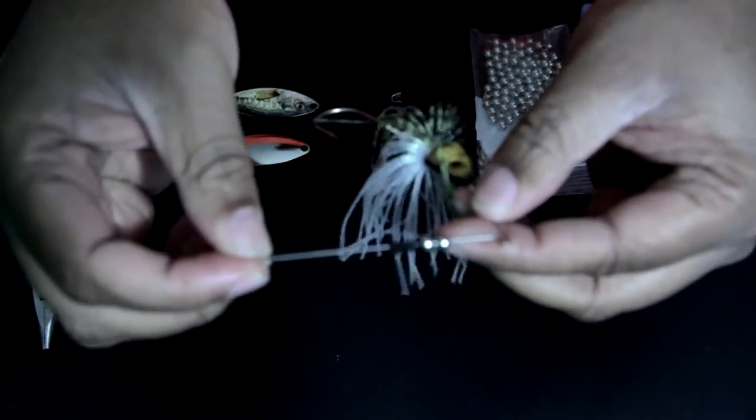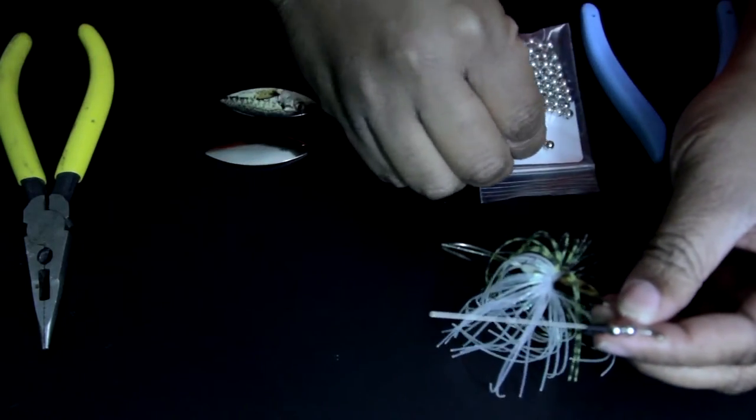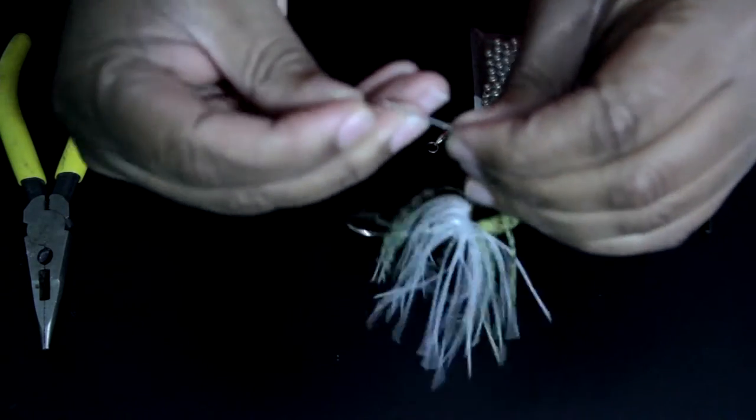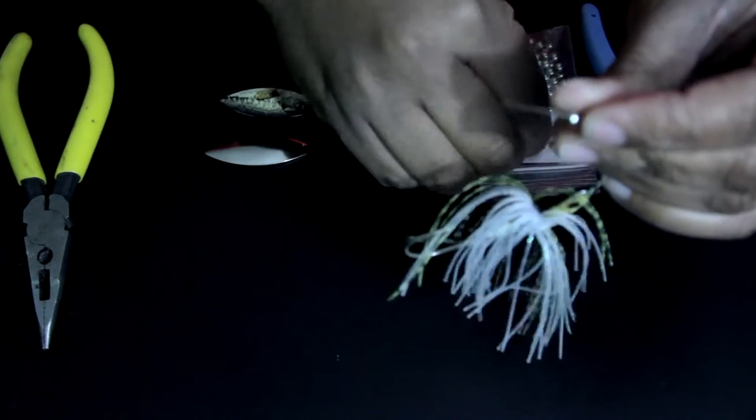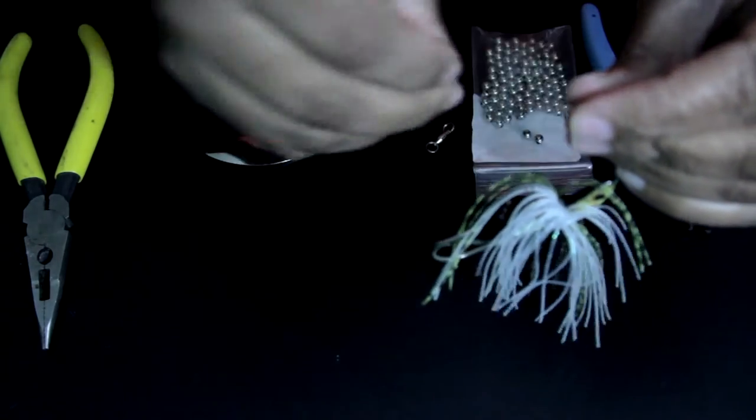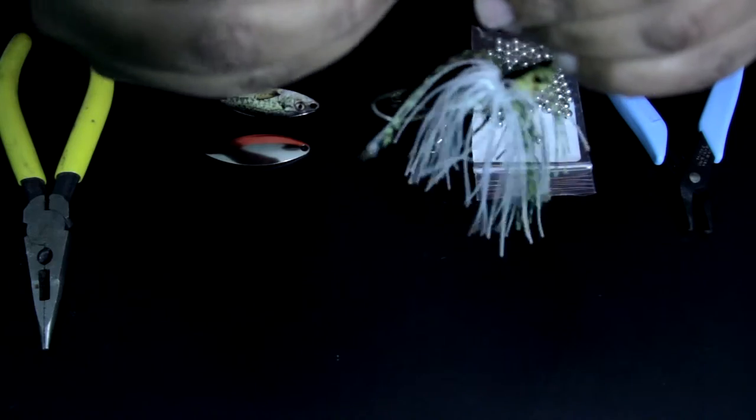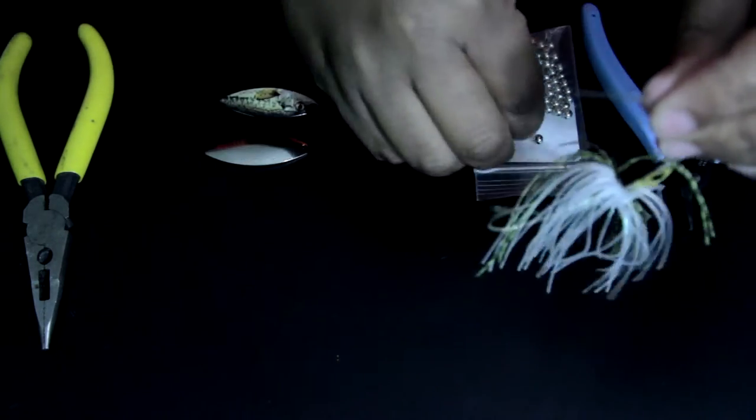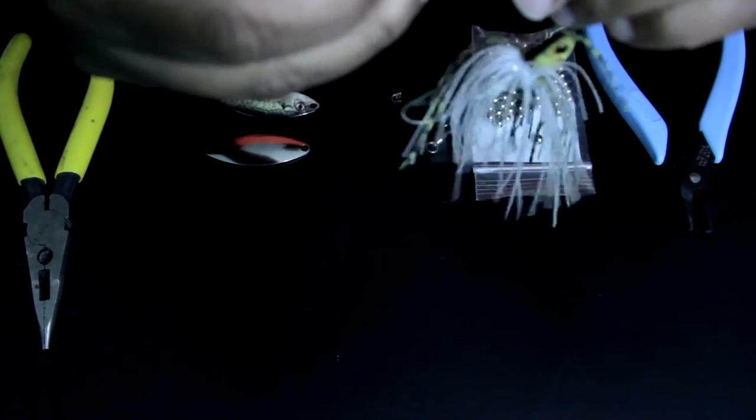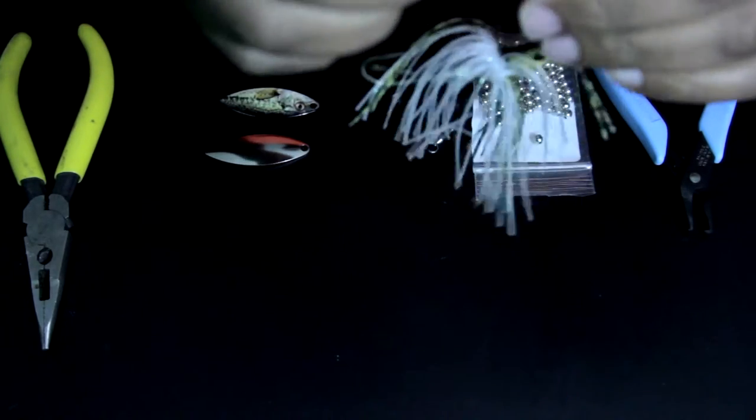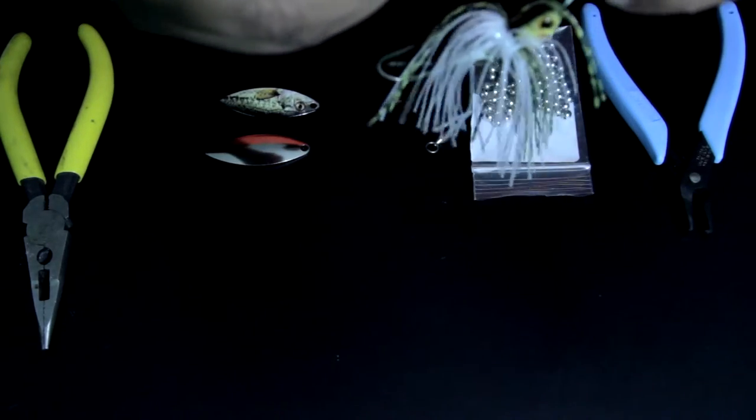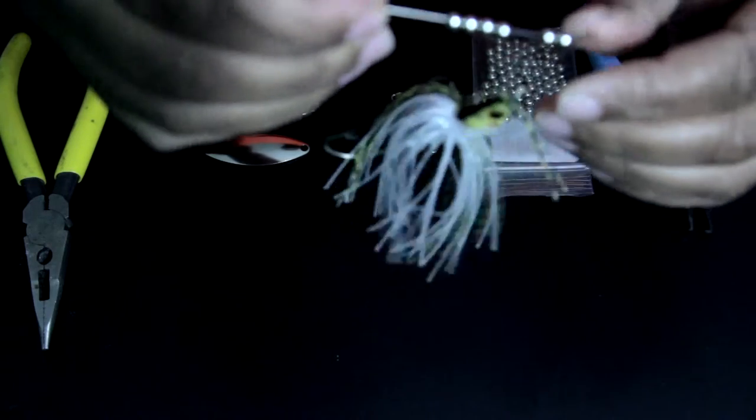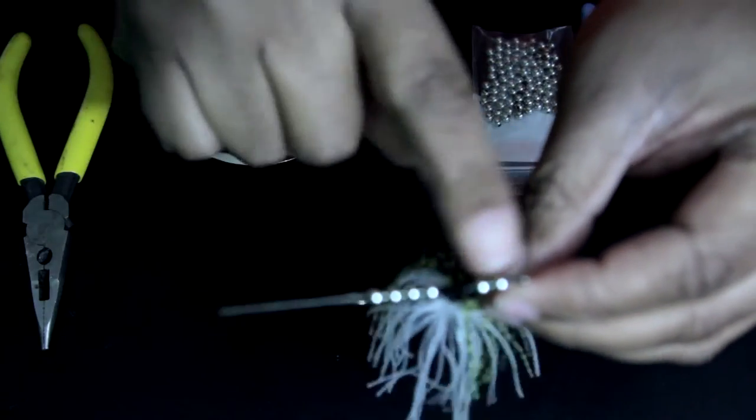Once I get it on I won't be able to get it off again. So I've got that on there and then I'm going to throw four more beads on here to create some separation because if the willow blades are too close they'll hit each other and they won't spin right. They also have plastic separators that are just like long plastic tubes you can put in between the willow blades. So there it is.